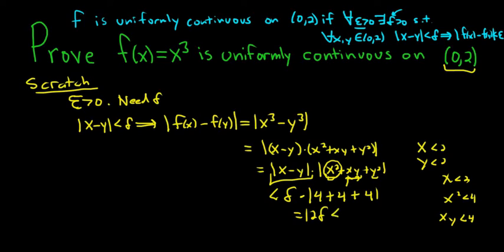And we want that to be less than epsilon. So what we can do is we can take delta to be epsilon over 12, right? So if we do that, the 12s will cancel, and we will get our epsilon. So that's going to be our delta in the proof.